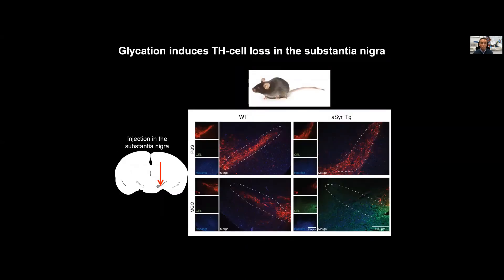When we knocked down alpha-synuclein, we reduced the cytotoxicity induced by methylglyoxal. This was also true in vivo. We took either wild-type animals or alpha-synuclein transgenic animals and injected methylglyoxal on one side of the brain or PBS on the contralateral side, then stained for tyrosine hydroxylase — a marker of dopaminergic neurons in the substantia nigra. In animals transgenic for alpha-synuclein, expressing higher levels of synuclein, TH reactivity was reduced significantly, suggesting these animals tended to lose more dopaminergic neurons.